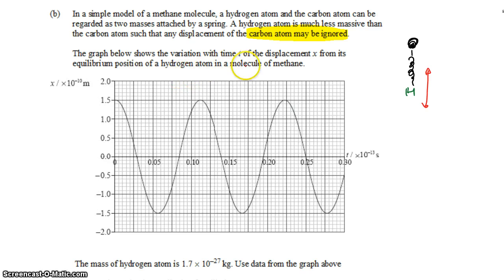In the graph below we have the variation with time t of the displacement x from the equilibrium position of the hydrogen atom in the model of the methane. So the hydrogen atom bounces, starts up, bounces down through the equilibrium position, back up again and down again and up again and down again.